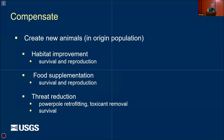We can also compensate by creating new habitat so that animals can survive there. We can do habitat improvement, which potentially affects survival and reproduction; food supplementation, which also affects survival and reproduction; or threat reduction — such as power pole retrofitting or removing toxicants from the environment — which primarily affects survival rather than reproduction.